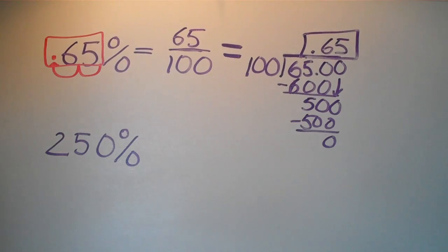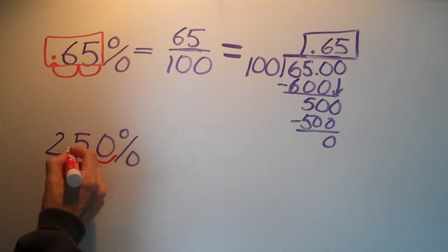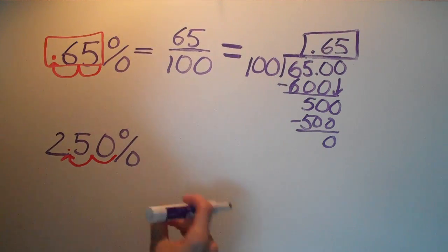Let's do the same thing with 250 percent. We start at the end, go one, two, add our decimal right there, and we get 2.50 or two and fifty hundredths.